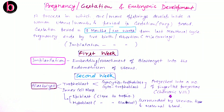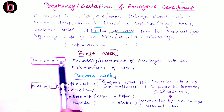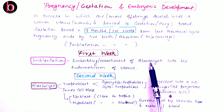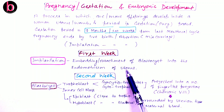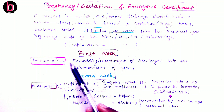When the blastocyst reaches the uterine body, it is covered by the non-cellular proteinaceous zona pellucida. Due to more and more secretion by trophoblast cells, internal pressure causes rupturing of the zona pellucida. The blastocyst is now ready to implant and attach with the innermost uterine layer. Implantation is the embedding or attachment of the blastocyst into the endometrium of the uterus, and it occurs after one week of fertilization.